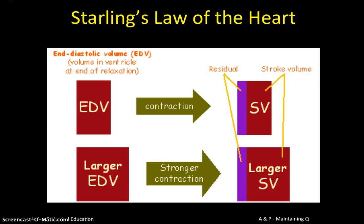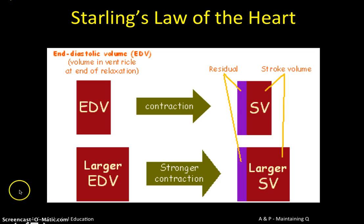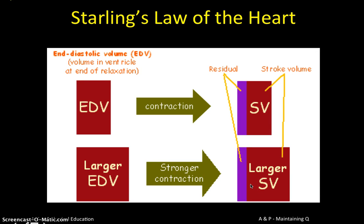Moving on to Starling's Law of the Heart — the other factor influencing stroke volume and cardiac output. If your heart has a small volume filling it — a low EDV — the myocardium isn't particularly stretched, so you'll only have a small contraction and a low stroke volume. But if venous return is good, more blood fills the heart during the relaxation phase, stretching the myocardium. The heart chambers respond by contracting much more powerfully, producing a larger stroke volume. So the amount the heart fills, reliant on venous return, determines the strength of contraction.